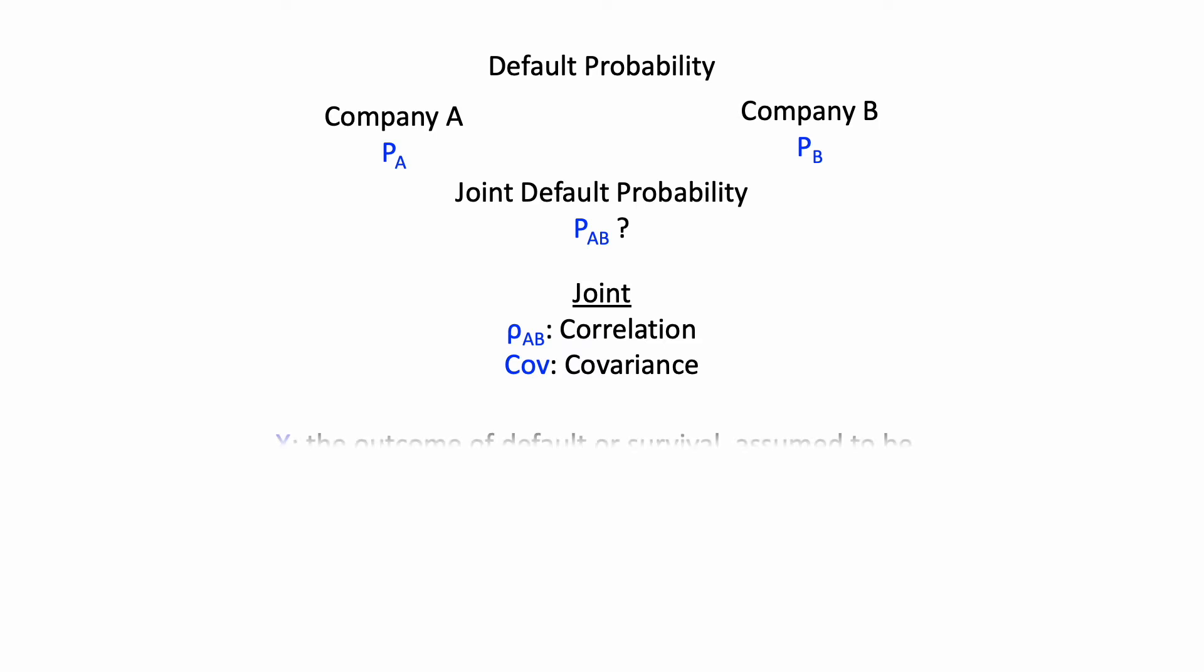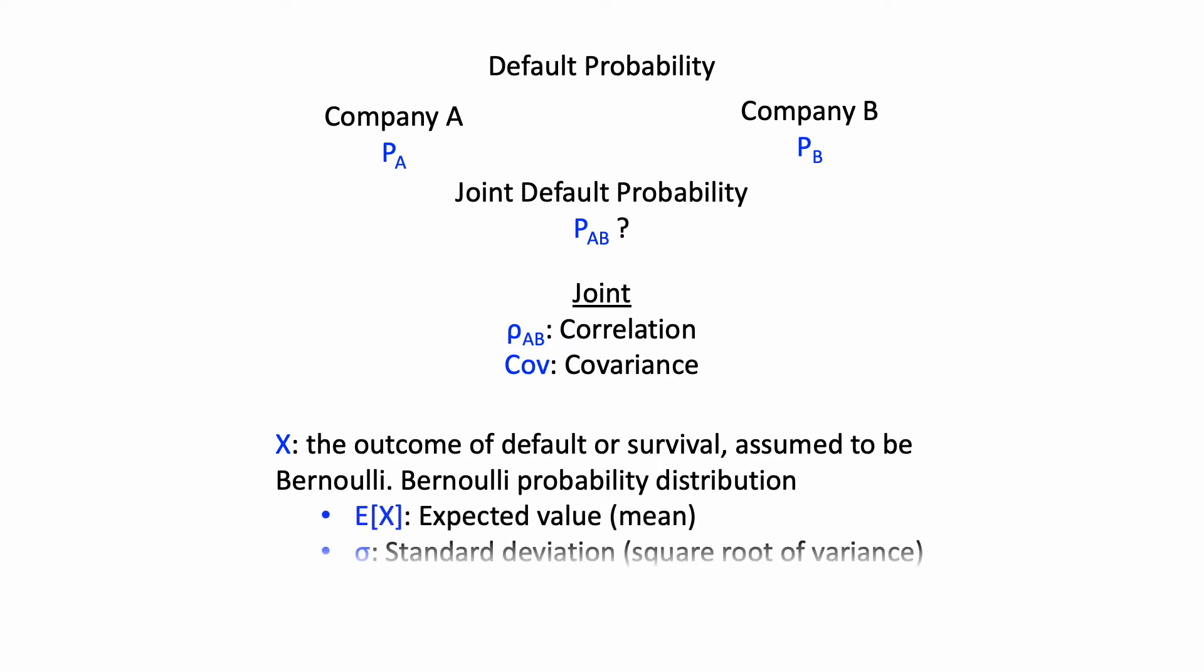Default for any security is a binary event. The security either defaults, or it does not, or it survives. For such a binary event, we can model it as a Bernoulli variable following the Bernoulli probability distribution. Then we can calculate the expected value, the mean, standard deviation, and the expected value of the products of two variables. All of these are going to be used for the correlation coefficient and then in the joint default probability calculation.